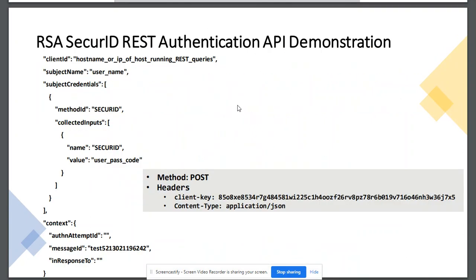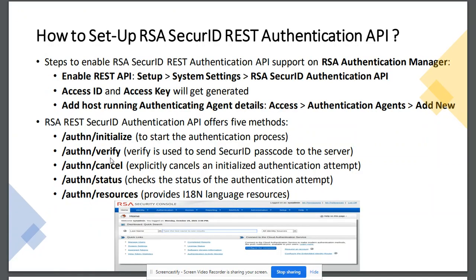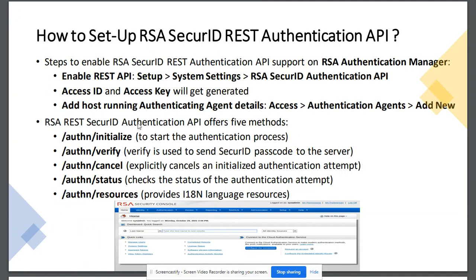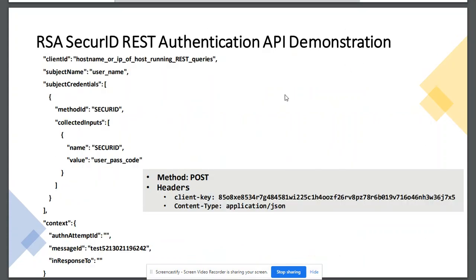Let's have a quick demonstration of how this works. We will combine Initialize and Verify in one step. The body of our request will contain: client ID, which is the hostname or IP of the host running the request; subject name, which contains the username; the method we are using is Secure ID; and the value will contain the user passcode. The HTTP method is POST, and the client ID is our API key which was generated when we enabled the REST API on the authentication manager. The message ID should be a unique ID.